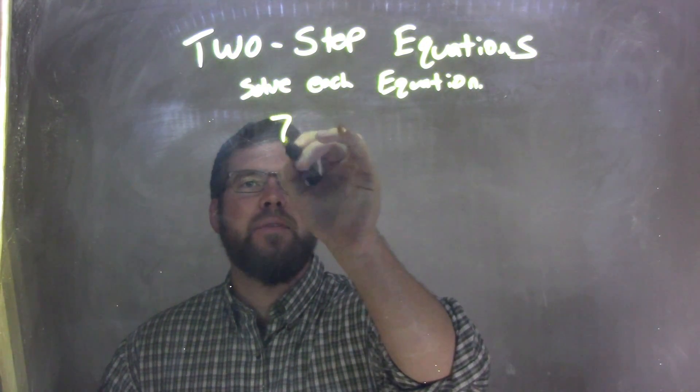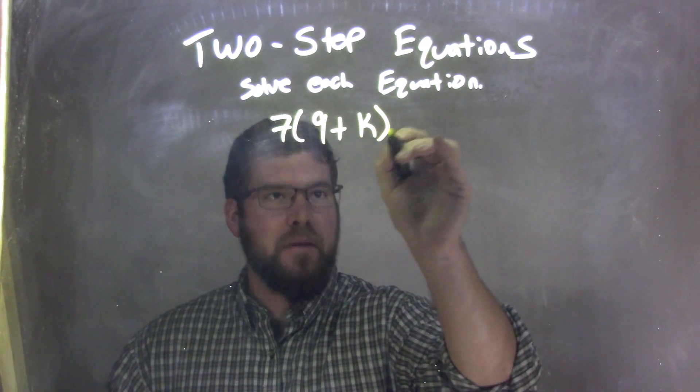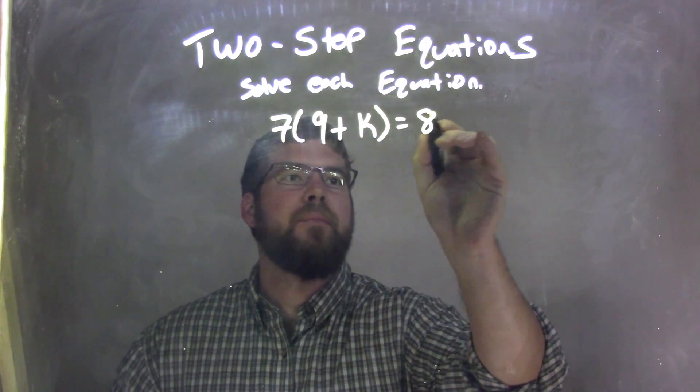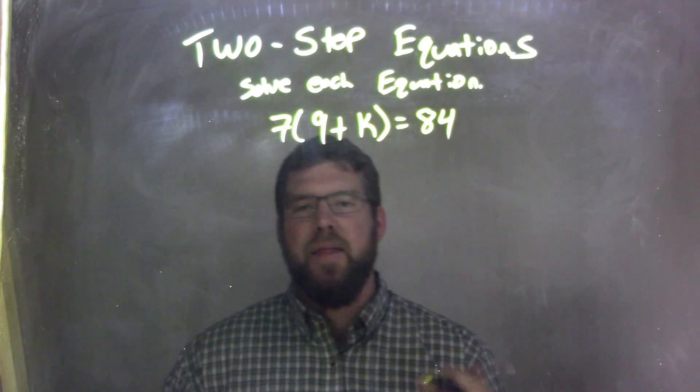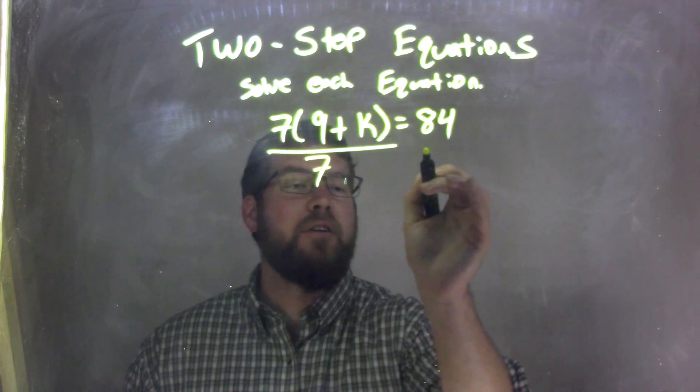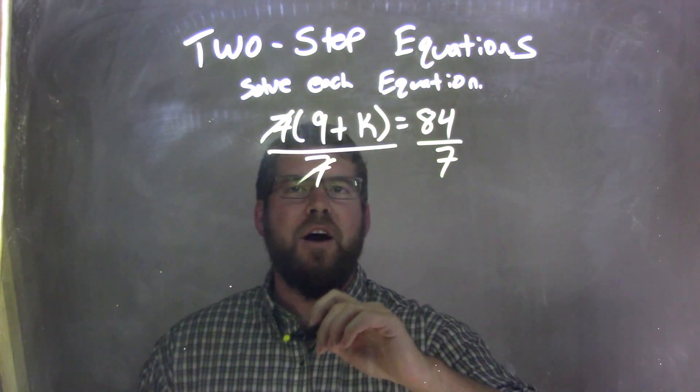So if I was given this equation here, 7 times 9 plus k equals 84. Well, I see there's multiplication going on here outside the parentheses, so first step, I'm going to divide by 7 on both sides, opposite of that multiplication.